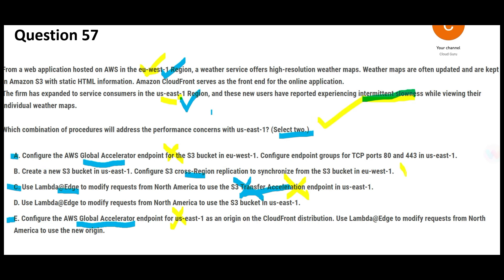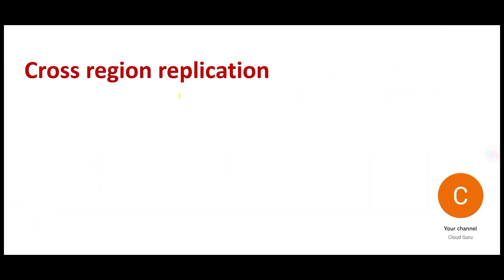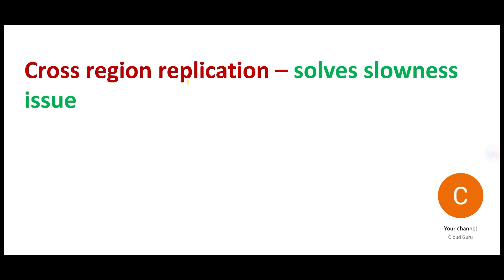We need two answers, and we have options B and D. Option B suggests using cross-region replication. The moment US West receives the files, they get replicated to US East, and that is how you solve the slowness issue. This is one solution.